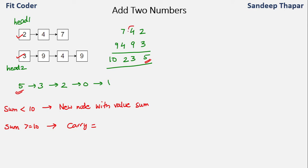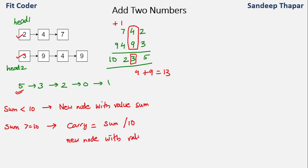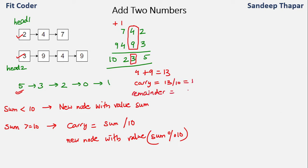But if the sum is greater than or equal to 10, then comes the concept of carry. For example, 4 plus 9 equals 13. Since a node can have only a single digit, 3 will be used for the new node and 1 will be carried forward to the next node sum. To compute the carry we divide the sum by 10, and we create a new node with the remainder using sum mod 10. So when the sum is 13, carry is 13/10 = 1 and the new node value is 13 mod 10 = 3.